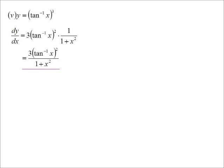Chain rule. So, bring down the power of 3, lower the power to 2, differentiate the inside. Differentiate inverse tan x is 1 over 1 plus x squared. And, tidying that up, there we go. 3 inverse tan x all squared over 1 plus x squared.